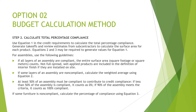If all the layers of an assembly are compliant, the entire surface area counts. Non-full-spread wet applied products are included in the definition of interior finish if they are installed on site. If some layers of an assembly are non-compliant, calculate the weighted average using equation two. At least 50% of an assembly must be compliant to contribute to credit compliance; if less than 50% is compliant it counts as zero percent. If 90% of the assembly meets the criteria it counts as 100% compliant. If some furniture is non-compliant, calculate the percentage of compliance using equation three.